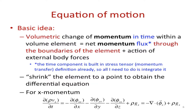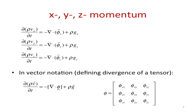This is my x-momentum. I can write a similar equation for y and z. When I write all three of them, this is what we get. To make this a vector equation, I'm going to define divergence of a tensor. Divergence of a tensor is a vector — each coordinate of that vector is the divergence of one of the vectors that constitute the tensor.